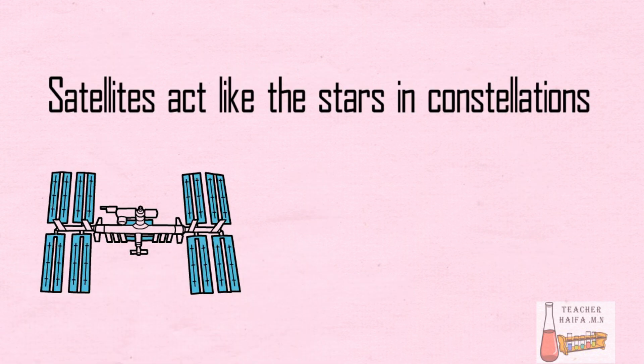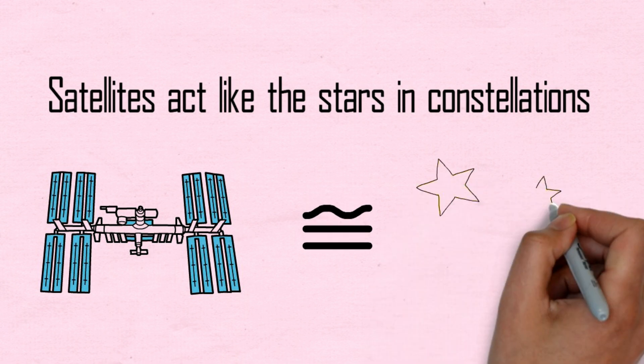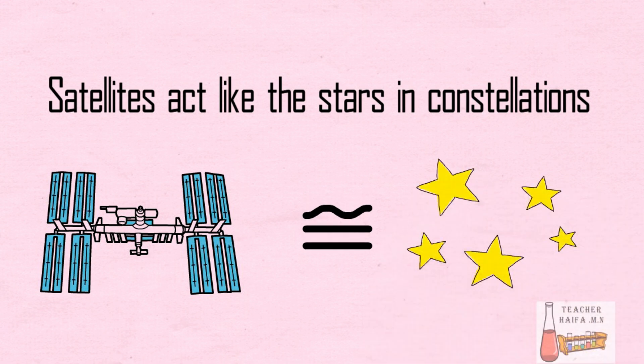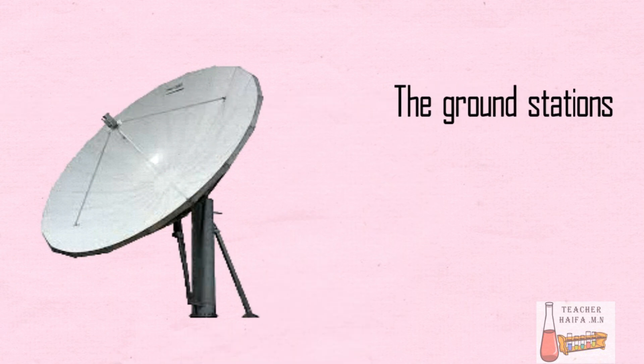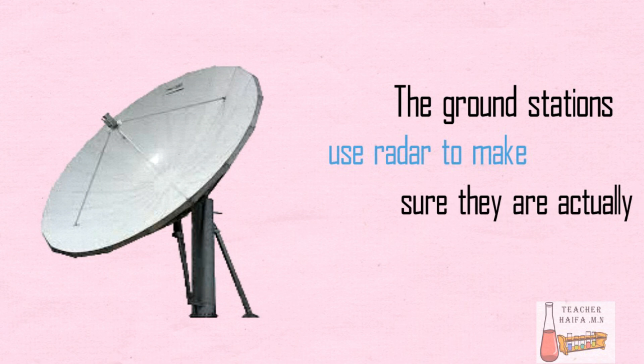Satellites act like the stars in constellations. The ground stations use radar to make sure they are actually where we think they are.